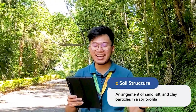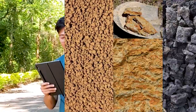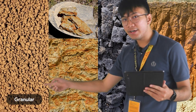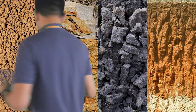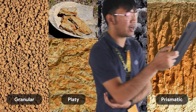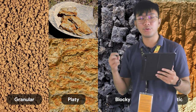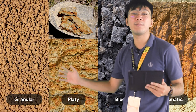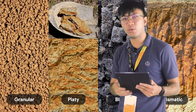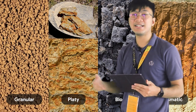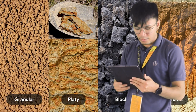Another soil property is soil structure — the arrangement of sand, silt, and clay particles in a soil profile. We have four basic soil structures: granular, platy, blocky (angular), and columnar or prismatic. Granular structure has individual particles grouped in small, nearly spherical grains, and is best for water seepage. It is usually located near the surface of the soil.